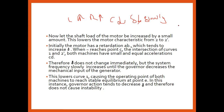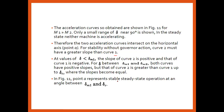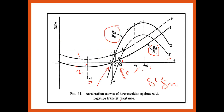At the same time, the frequency of the machine lowers, until the governor decreases the mechanical input of the generator. The governor increases the input to the generator, which lowers curve one, causing the operating point of both machines to reach the stable condition at point E. At point E, the system is again stable, with the range of del between del_m1 and del_m2.